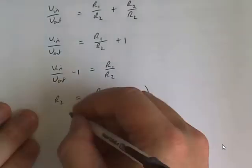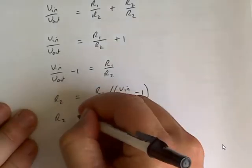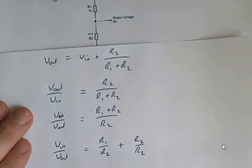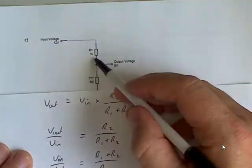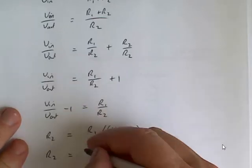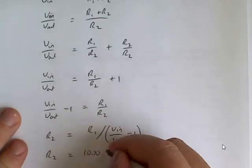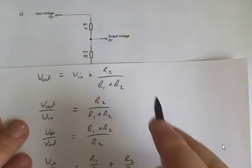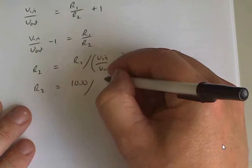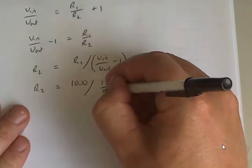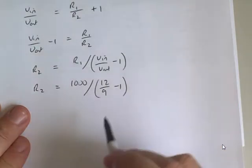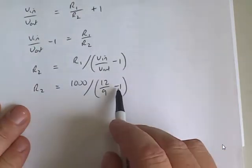So R2 which we don't know. R1, R1 from the original question is 1000. Divided by, input is 12 and output is 9. So we've got 12 divided by 9 minus 1. Make sure you put the brackets there otherwise that minus 1 will be done last.